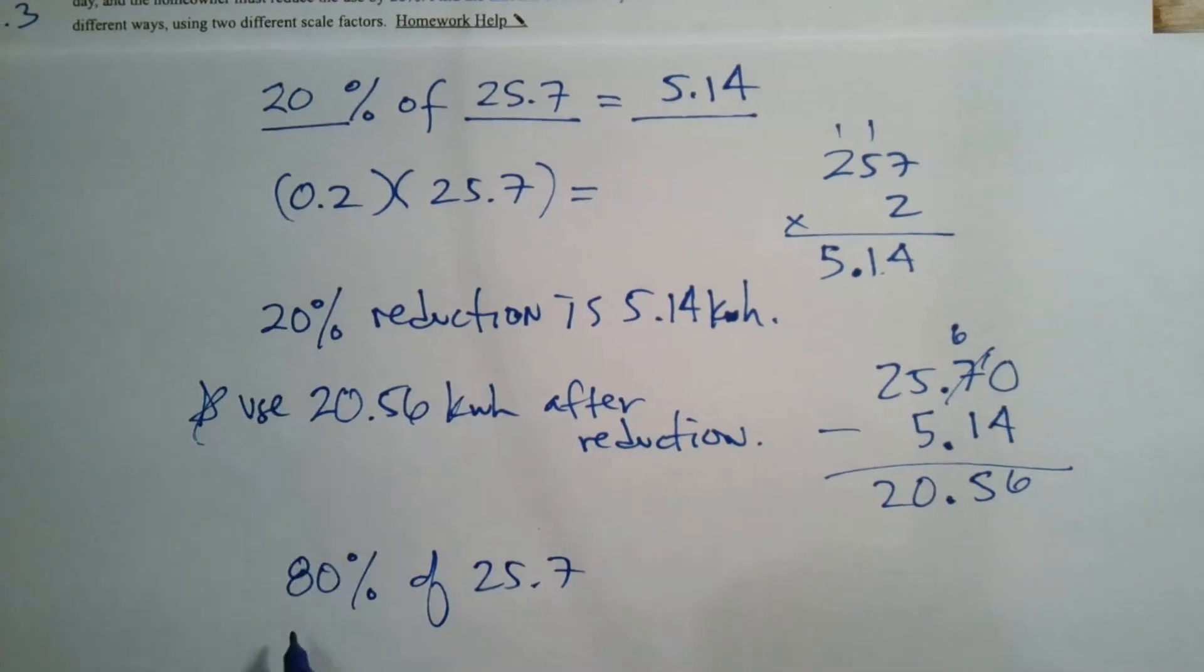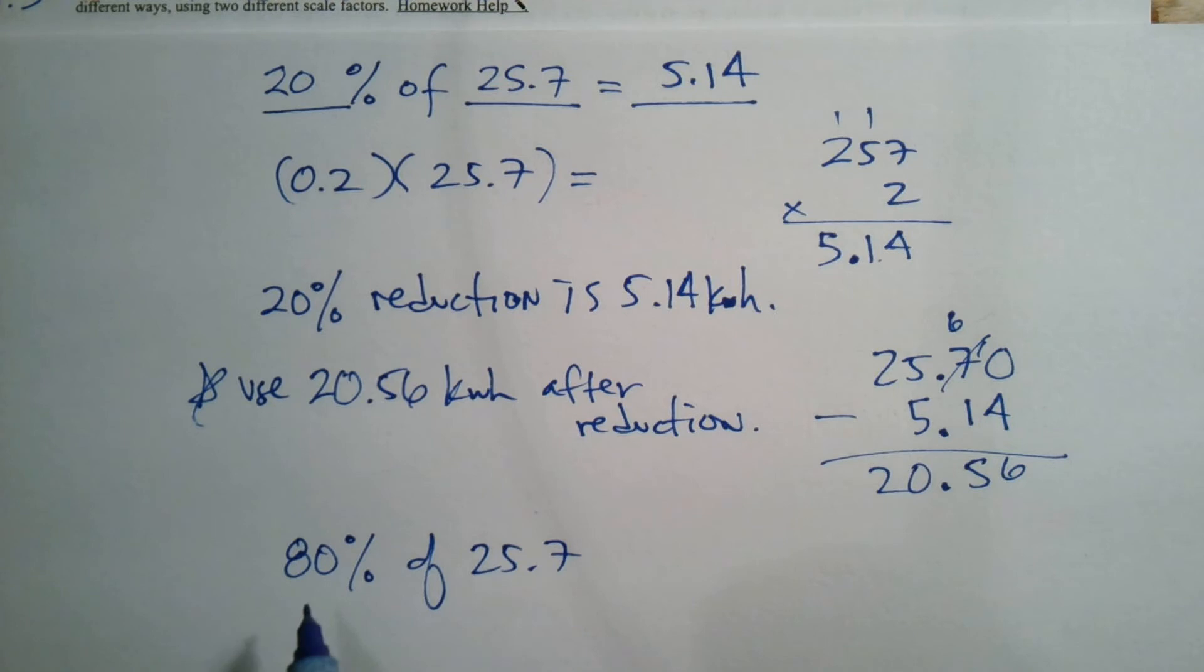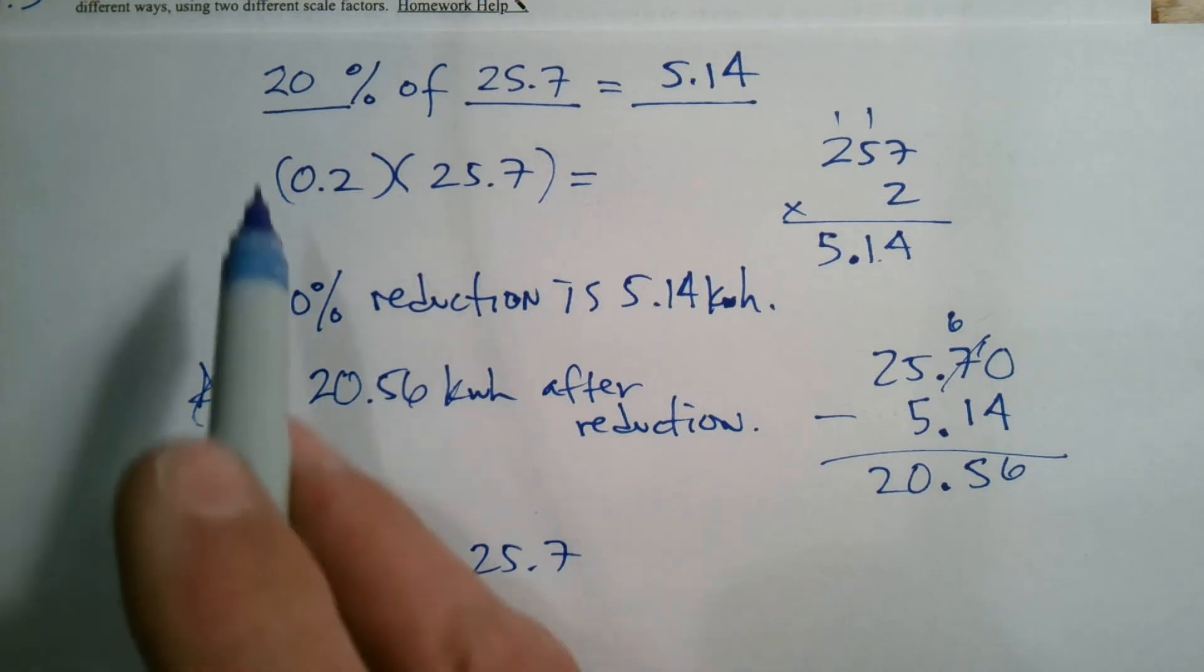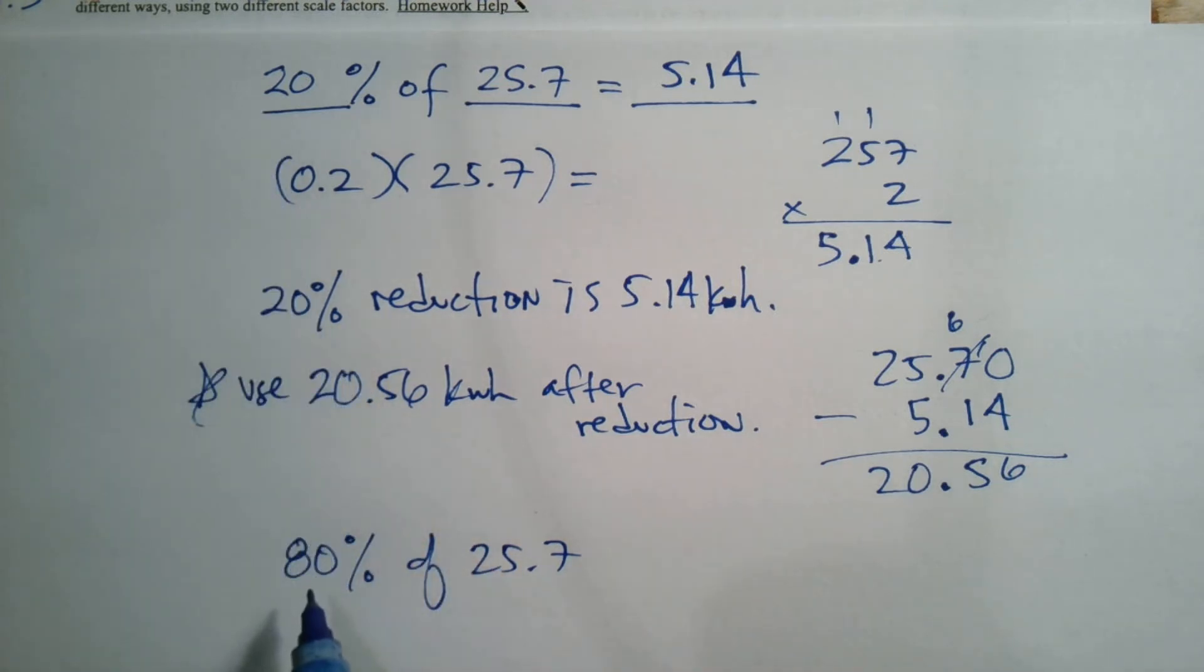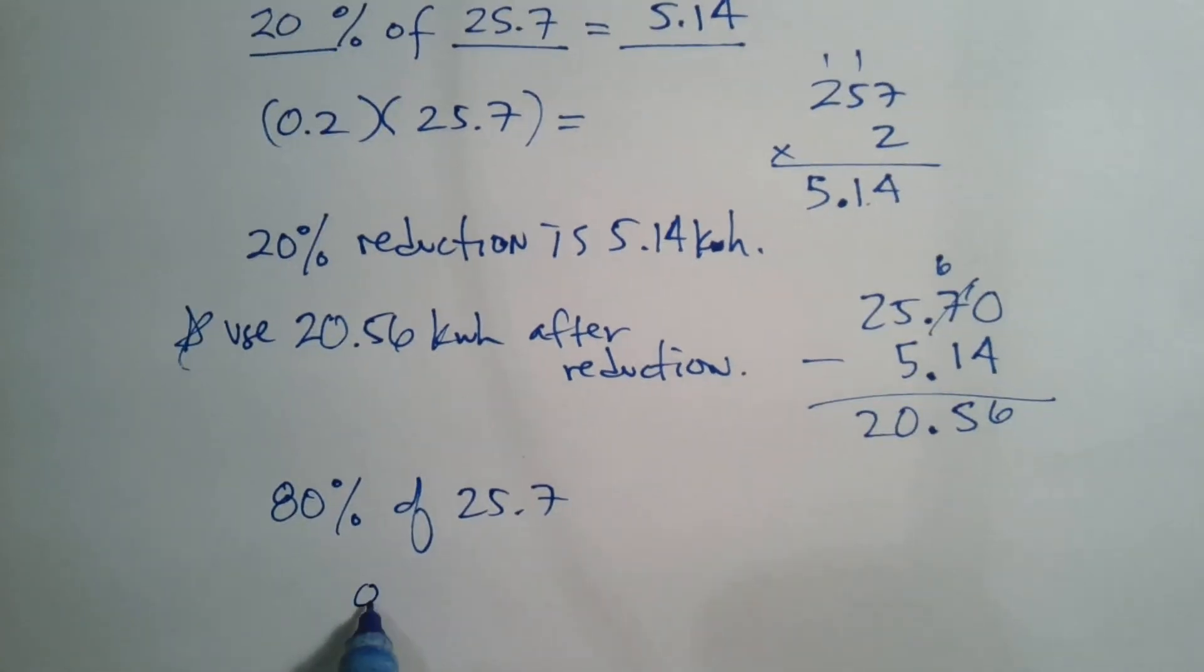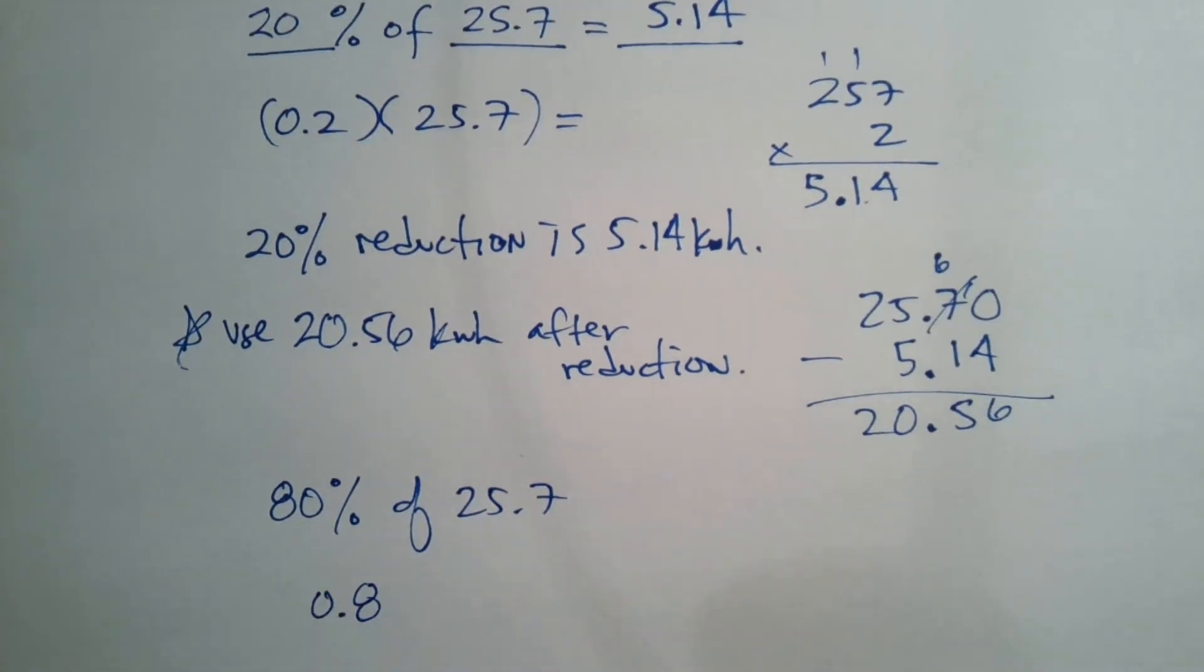20% was the reduction, so what I can use is the 80%. If I have to reduce by 20, what I can use is 80%. So this is some math of converting that to decimal, 0.8, and multiplying it times 25.7.